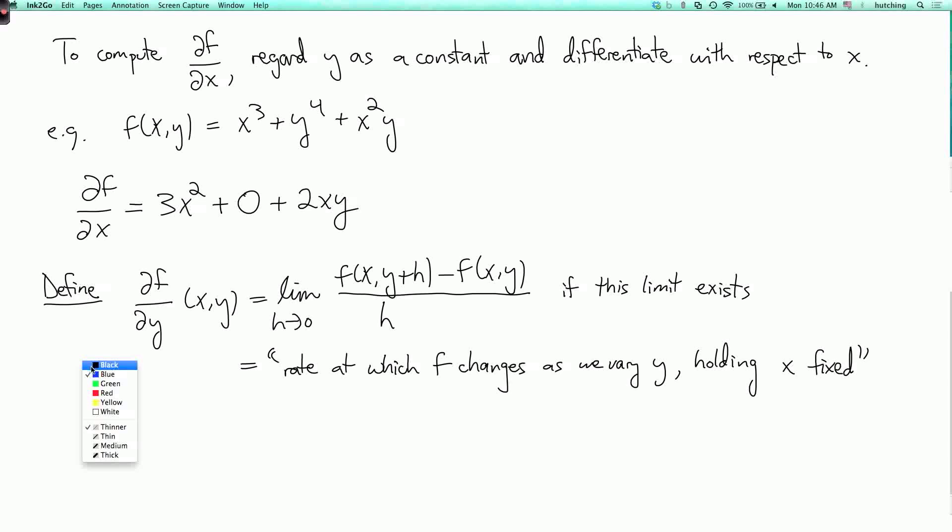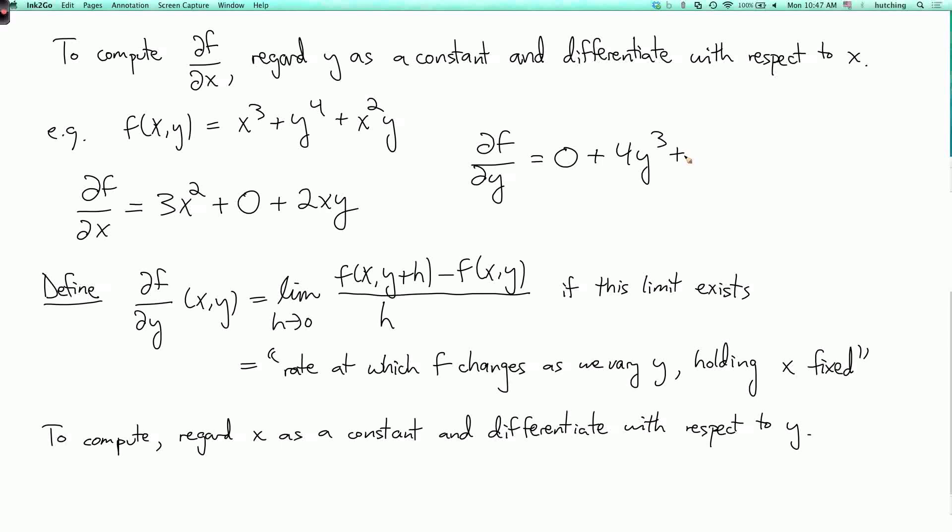Now as a practical matter, to compute the partial derivative with respect to y, you regard x as a constant and differentiate with respect to y. So in our example here, for this particular f, what's the partial derivative with respect to y? Well, so first we differentiate x cubed and now x is acting as a constant, so this derivative is zero. Then we differentiate y to the fourth with respect to y. So by the usual single variable rules, that's 4y cubed. And finally, we differentiate x squared y. And since x squared is acting like a constant, that gives us x squared.